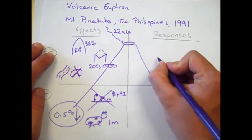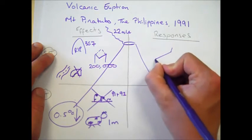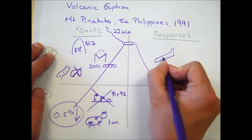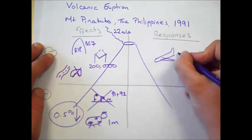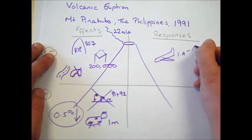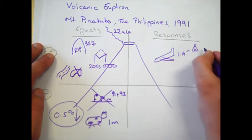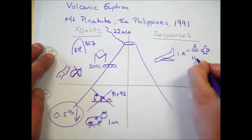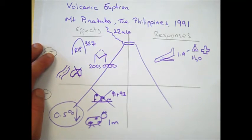A nice common short-term effect, one to always consider talking about, is the arrival of international aid. They would have brought with them emergency accommodation, tents, first aid, and on top of that, they would have brought things such as water supplies and emergency food.